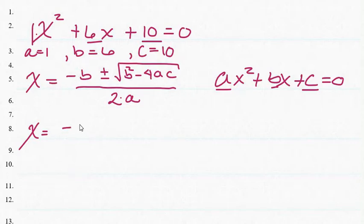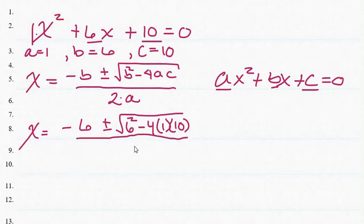So b is 6. We have negative 6 plus or minus—now for the discriminant, they call this—so this is 6 squared minus 4 times a, which is 1, and times c, which is 10, and it's all over 2 times a, which is 1.